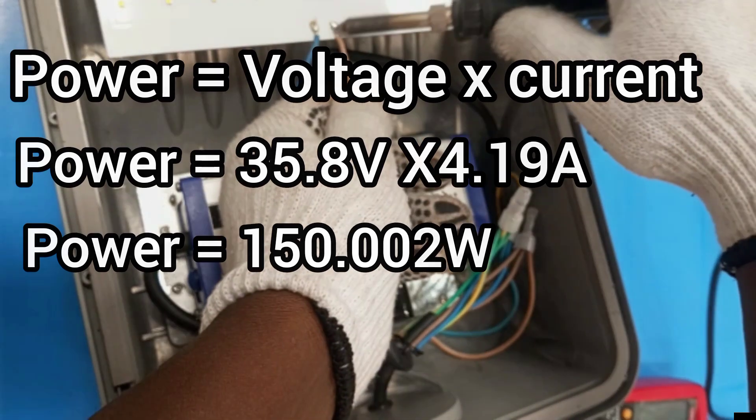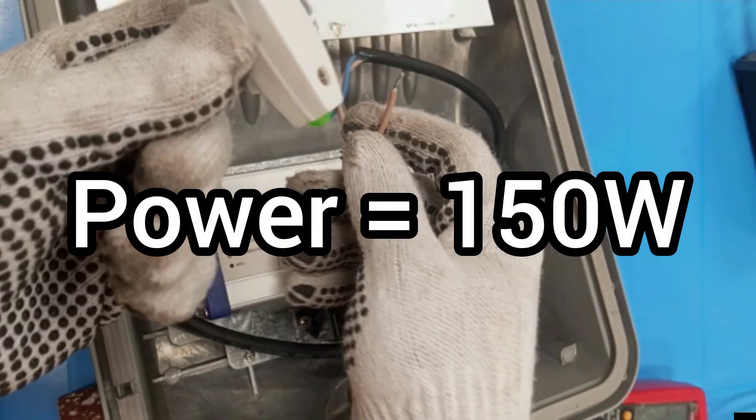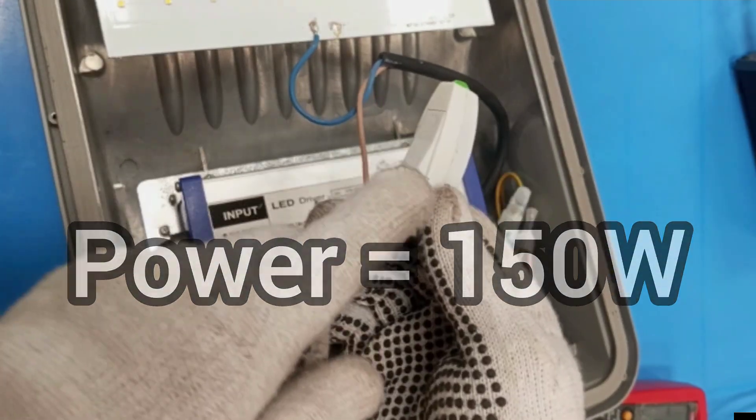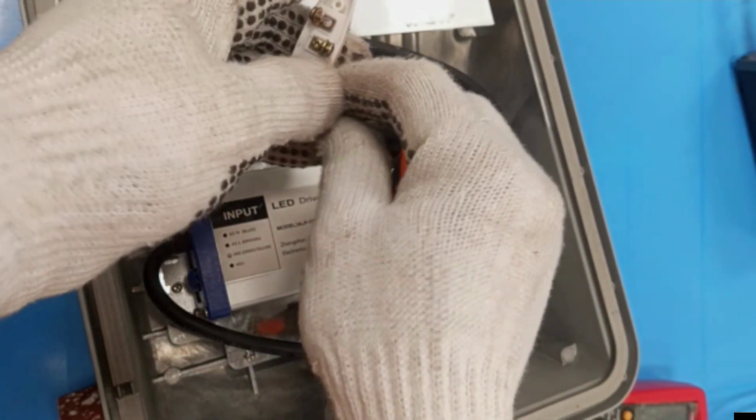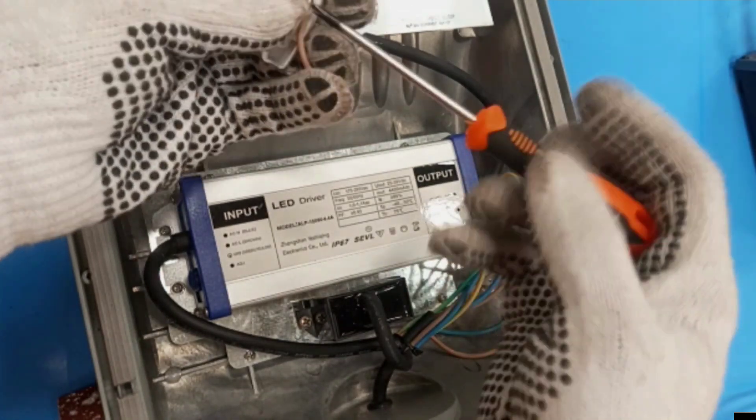Approximately from the measurement we have done, the multimeter is able to give us the power rating of the lamp as 150 watts. Thank you very much for watching this video. If you have learned something new from this video, kindly hit on the like button, share with your friends, and subscribe to stay connected. See you in my next video.